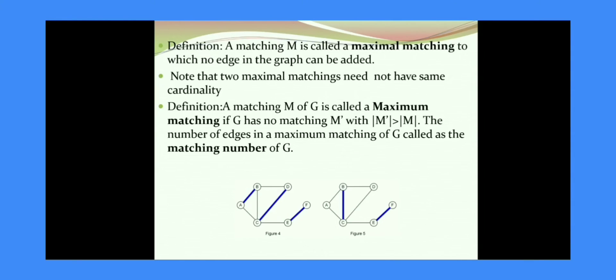Now consider the edges which are not in matching. BD - can we add BD to the matching? No, because AB and BD are adjacent. The condition is it should be non-adjacent. So in the same way, if I consider all the edges which are not in the matching, it is not possible for me to add any one of the edges. Then such a matching is called a maximal matching.